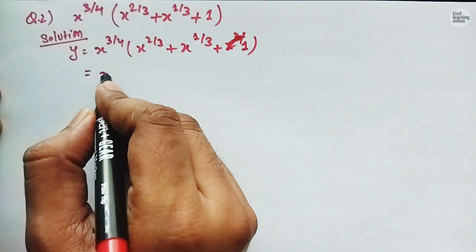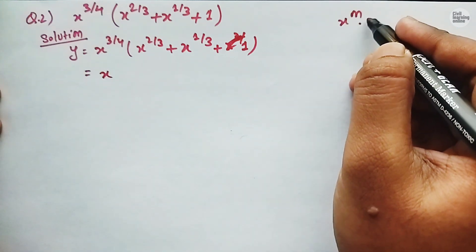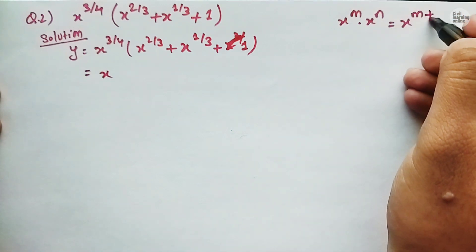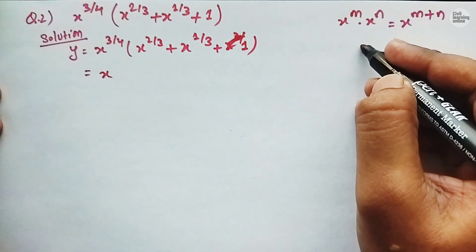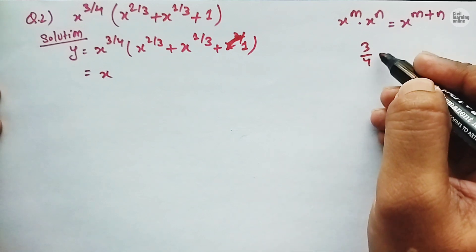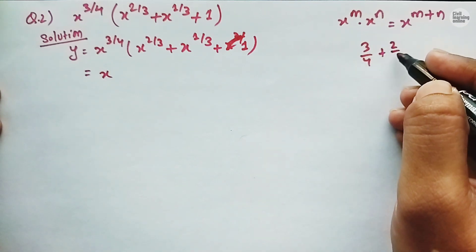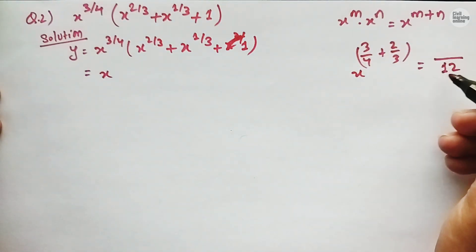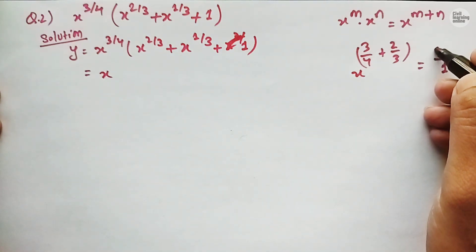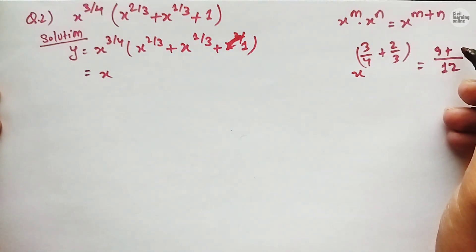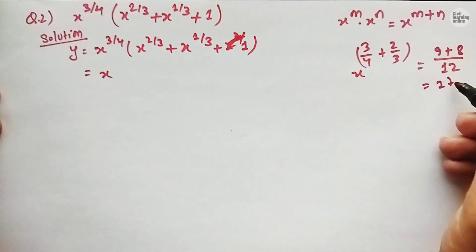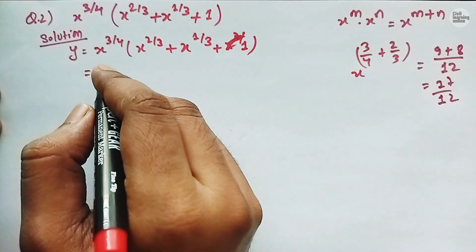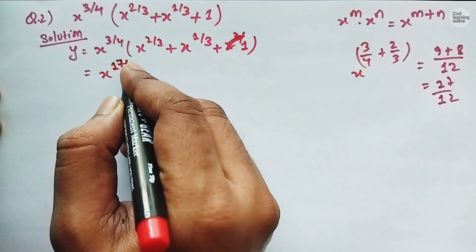We know that x to the power m times x to the power n equals x to the power m plus n. So multiplying x to the power 3 by 4 and x to the power 2 by 3, we get x to the power 3/4 plus 2/3. With denominator 12, that gives us 9 plus 8 equals 17 upon 12, so we have x to the power 17 upon 12.